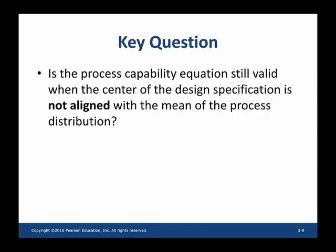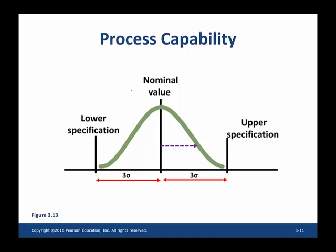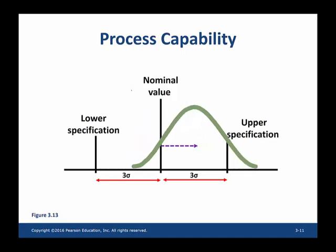A key question is: is the CP equation still valid when the mean of the process distribution and the center of the design specification width are not aligned? The short answer is no. Even if the six sigma distance is contained within the design width and the process appears capable, if the distribution shifts to the right, some products fall beyond the design specification. Using CP would still give a value higher than one, which is incorrect. We need to modify the formula to account for the shift in the mean.